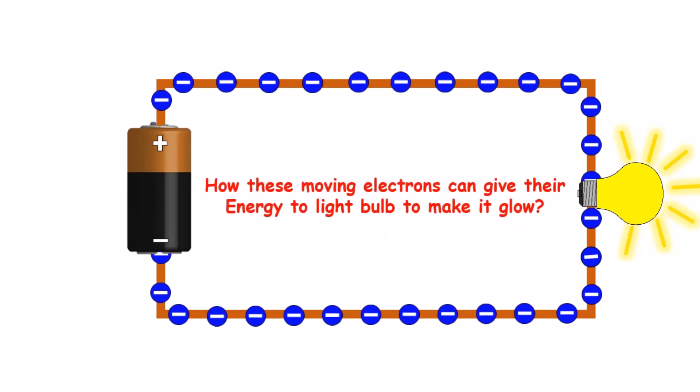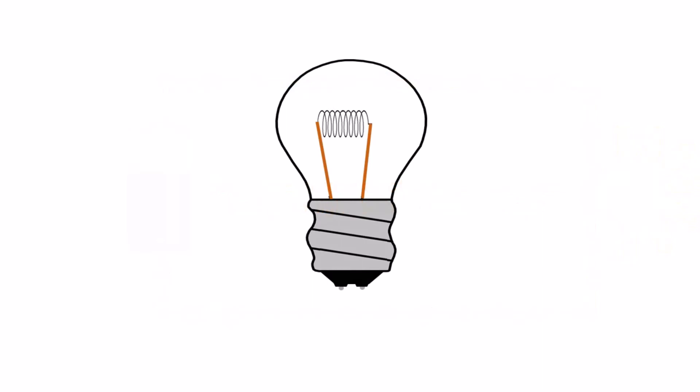But how do these moving electrons give their energy to the light bulb and make it glow? For that, you need to understand what light bulbs are made of. Light bulbs consist of only a few basic parts. The metal base has two electrical connections that connect to the ends of an electrical circuit.